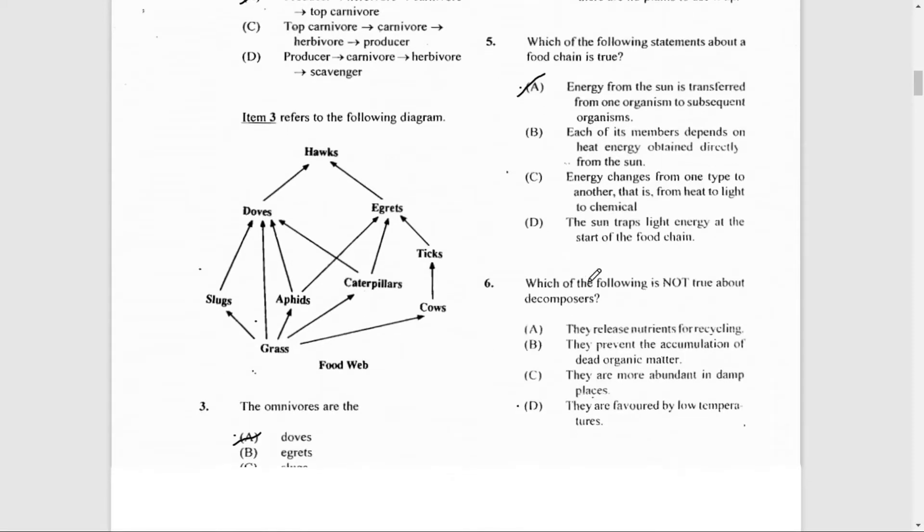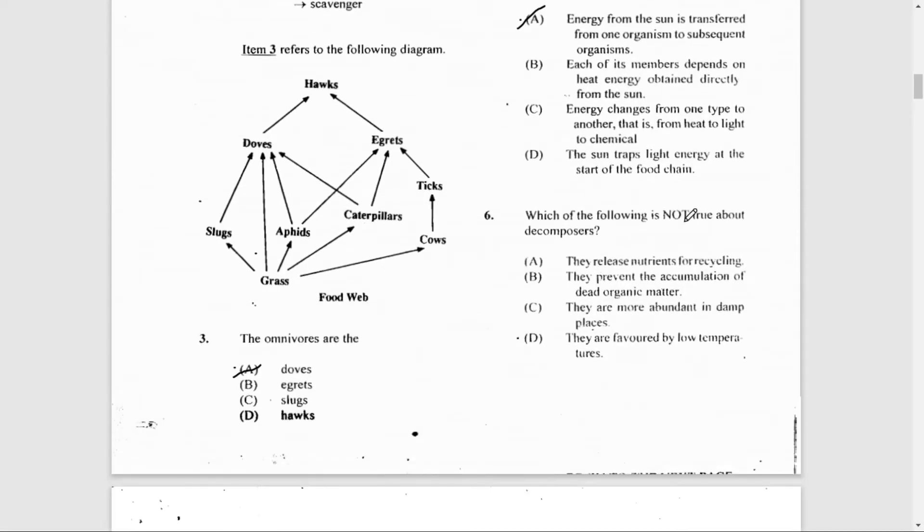Number 6: Which of the following is not true about decomposers? The answer here is D: they are favored by low temperatures. That is not true, as they prefer warm temperatures.